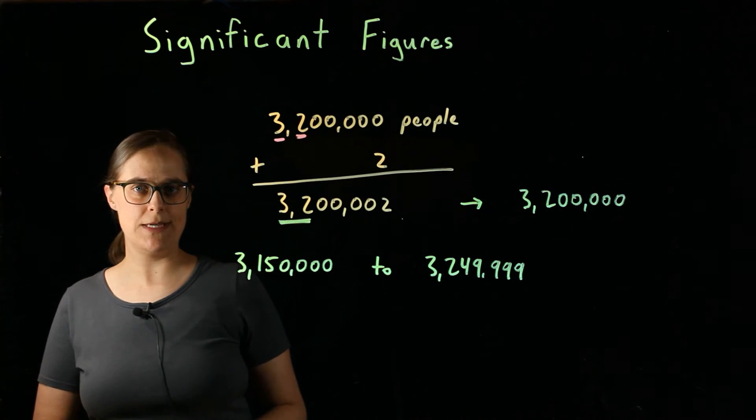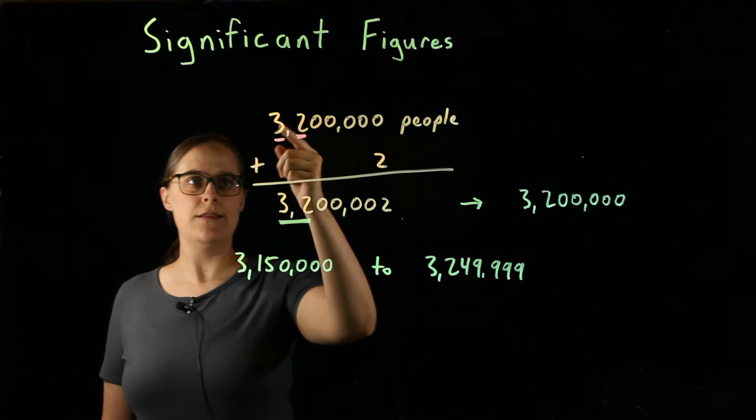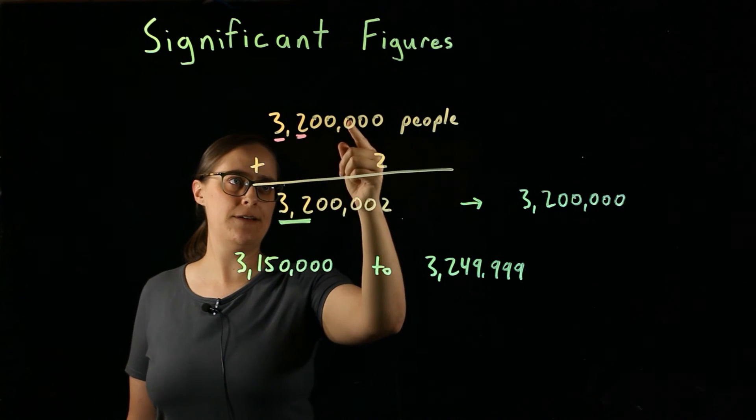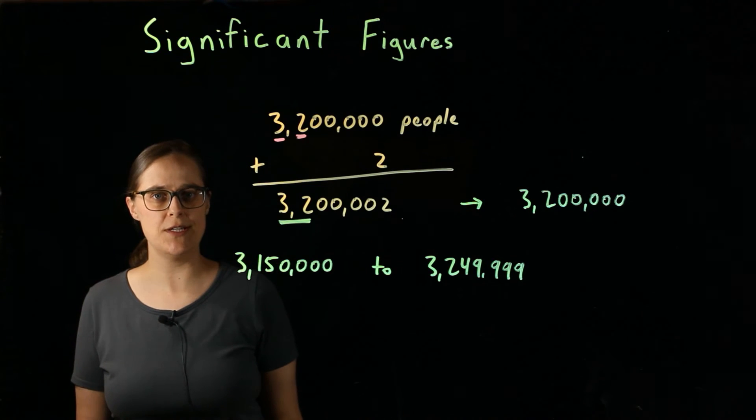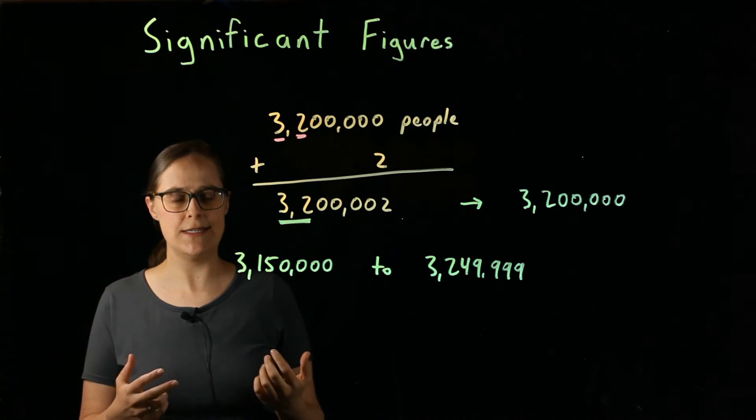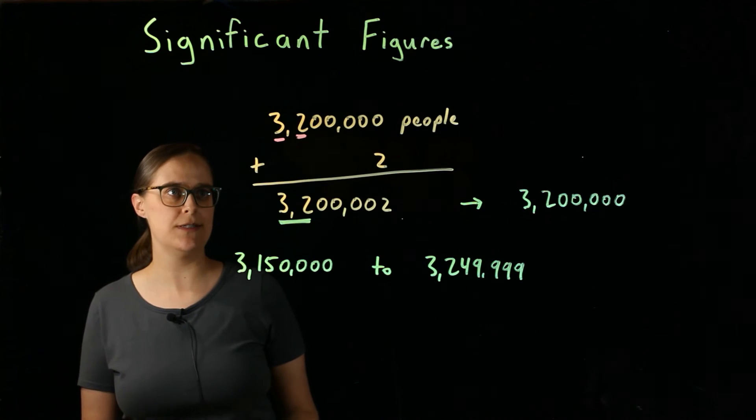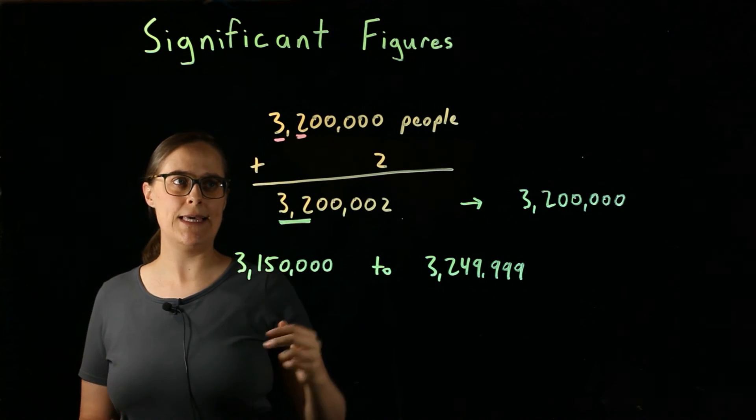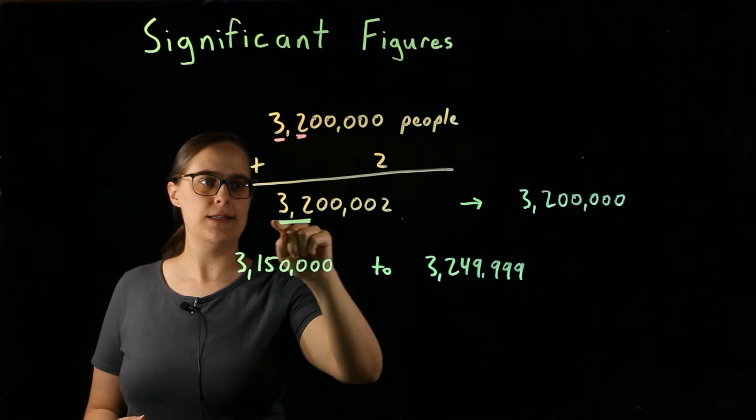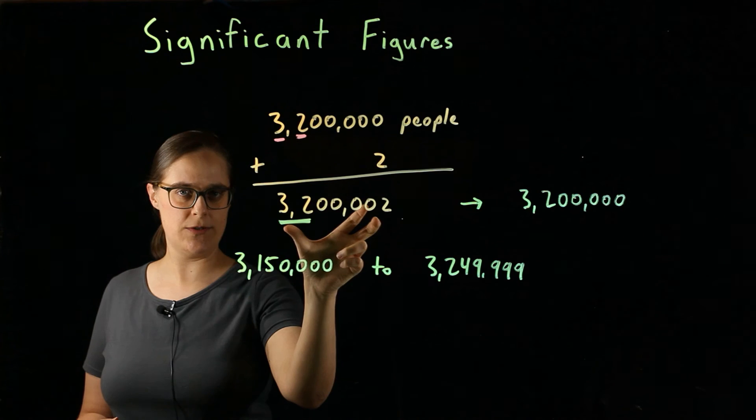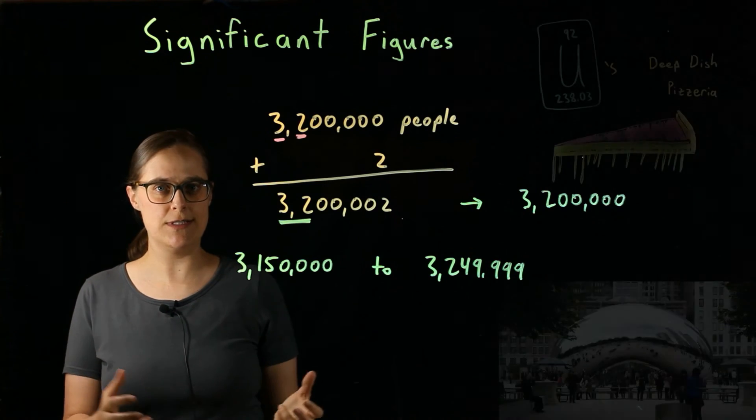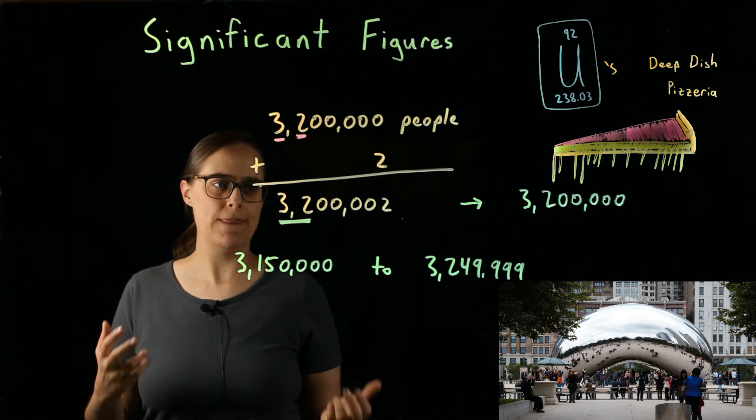To relate this back to our previous example of a restaurant in Chicago, think of the 3 as the city of Chicago and the 2 as some restaurant. And these 5 zeros are all just placeholders. They're information that you don't have. It could be a street address or a name of the restaurant or something else that can give you more information about what the restaurant is. If we only know the very beginning, we can't assume that we know these 5 zeros with certainty. This is the equivalent. This 3,200,002, assuming that this is a correct number, that's the equivalent of assuming that you know exactly what restaurant your friend is in. Your friend is in Uranium's Pizzeria, next to the big mirrored bean. That's a problem.